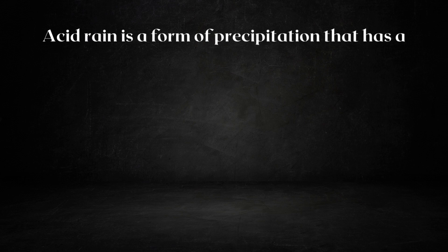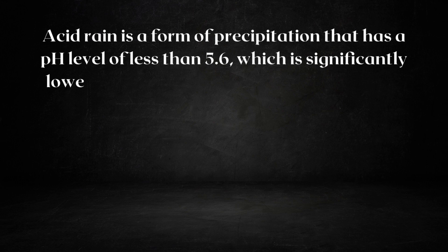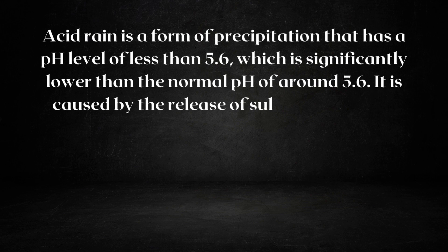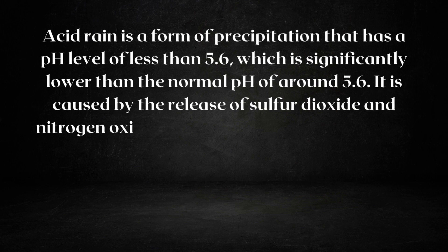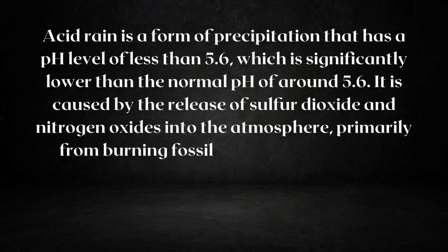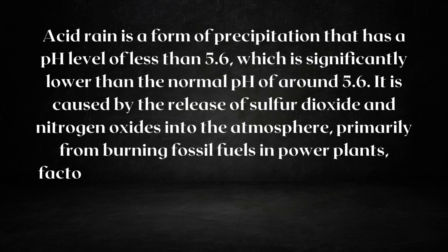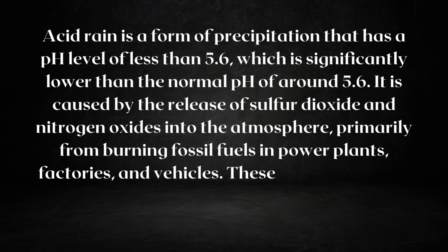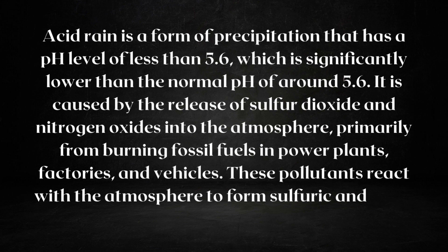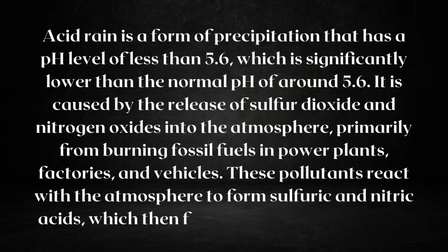Acid rain is a form of precipitation that has a pH level of less than 5.6, which is significantly lower than the normal pH of around 5.6. It's caused by the release of sulfur dioxide and nitrogen oxides into the atmosphere, primarily from burning fossil fuels in power plants, factories and vehicles. These pollutants react with the atmosphere to form sulfuric and nitric acids, which then fall to the earth as acid rain.